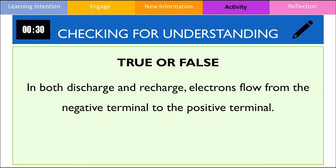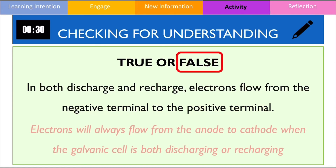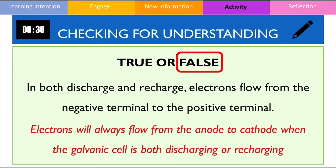To test your understanding, I would like you to answer the following question. Is the following statement true or false? The statement reads: in both discharge and recharge, electrons flow from the negative terminal to the positive terminal. This is false, because electrons always flow from the anode to cathode when the cell is both discharging or recharging. When it's recharging, electrons actually move from the positive terminal to the negative terminal, so that's why it's false.